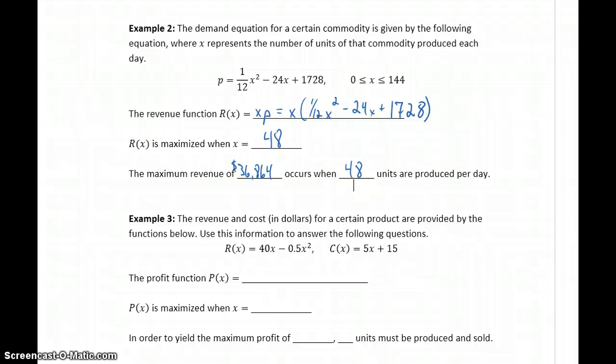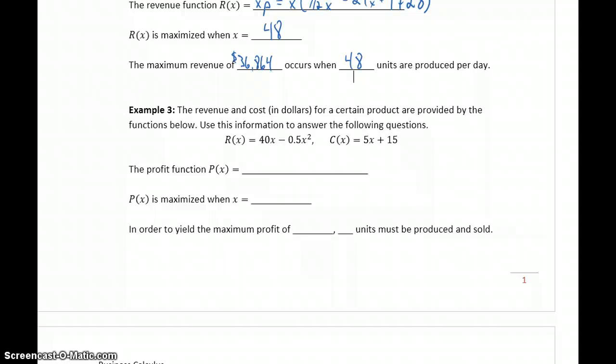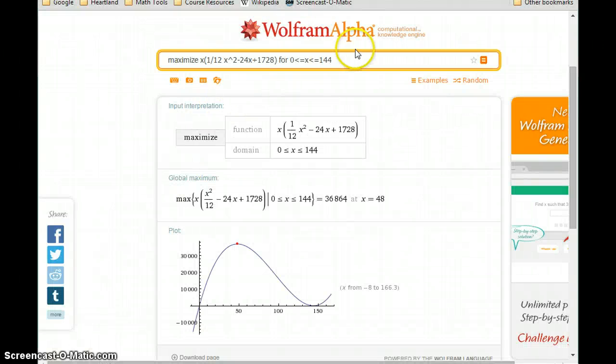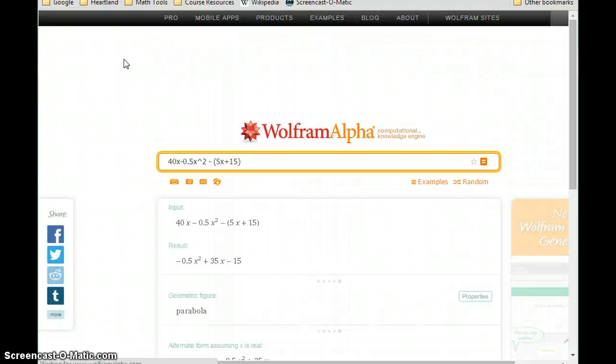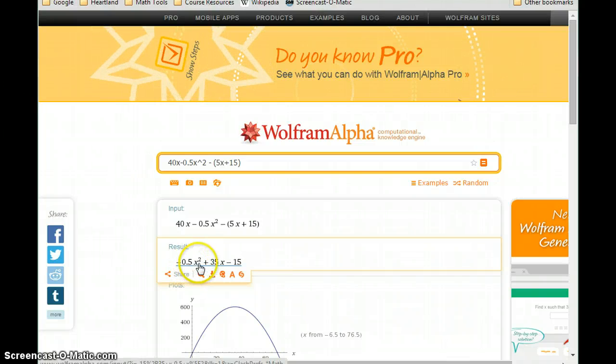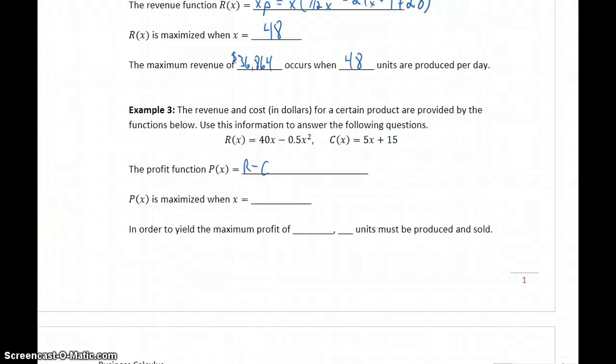Example 3 also follows that very similar pattern, the difference here being that we're given a revenue and cost function, and what we're going to want to maximize is the profit function. Our profit function is always equal to our revenue minus our cost. So, we could do this by hand, or using Wolfram Alpha, we could generate that profit function by taking 40x minus 0.5x squared and subtracting, in parentheses, the cost function 5x plus 15. To generate our profit function, negative 0.5x squared plus 35x minus 15. So, we generate our profit function.